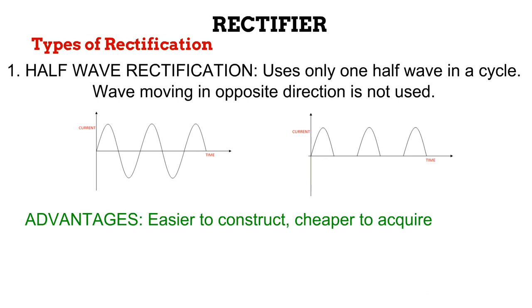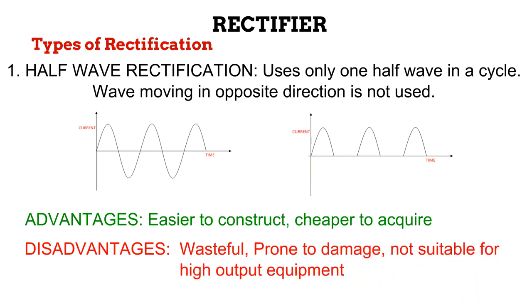The advantages of half-wave rectification are its ease of construction, and the fact that it is less expensive to acquire. However, because only one half of each cycle is used, it is a wasteful and less efficient process of converting alternating current to direct. Also, half-wave rectifiers are less rugged, making them unsuitable for high-output equipment.